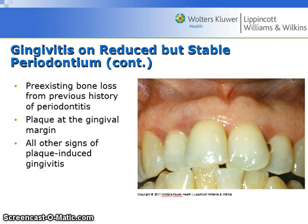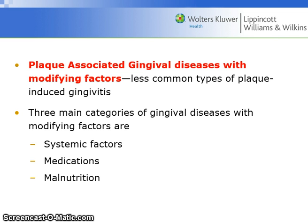Pre-existing bone loss from previous history of periodontitis may be seen on radiographs. There may be plaque at the gingival margin, but all other signs of plaque-induced gingivitis will also be visible. The three main categories of gingival diseases with modifying factors are systemic factors, medications, and malnutrition.